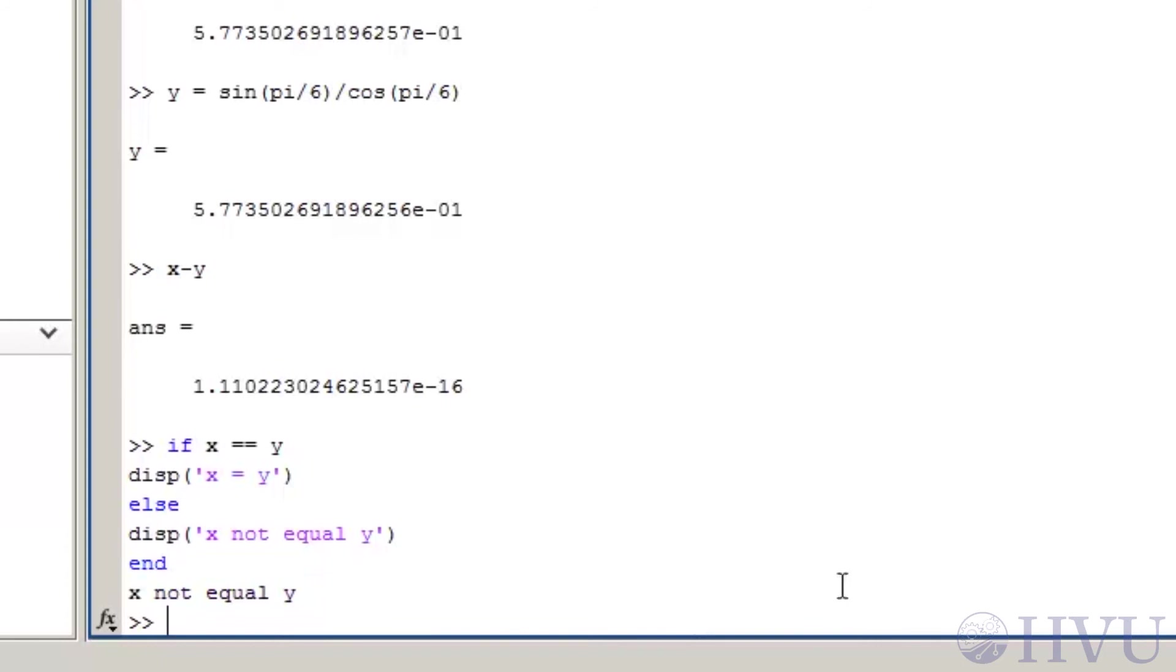In general, checking for equality between two floating point numbers, particularly numbers that are the result of a calculation, is a bad thing to do. You should always take into account finite precision effects when doing logical statements and especially try to avoid checking for strict equalities whenever possible.